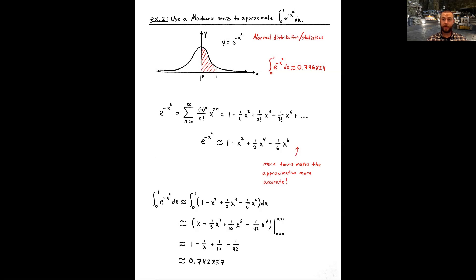Our approximation using the first four terms of the Maclaurin series for e to the negative x squared gives 0.742857 — very accurate compared to the Wolfram Alpha value of 0.746824. If for science and engineering purposes you need a more accurate approximation, include more terms from your Taylor or Maclaurin series, and that will generally give a more accurate result.